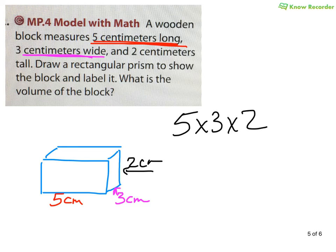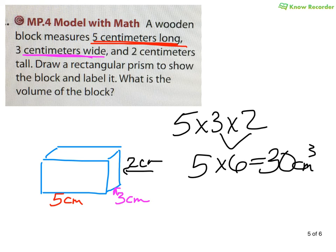So without further ado, 5 times 3 times 2. Well, I'm going to make that 6 because that's a nice easy fact. 5 times 6 is 30 cubic centimeters.